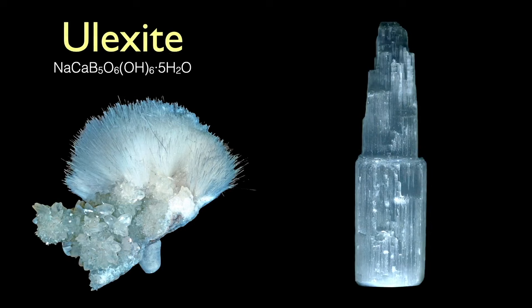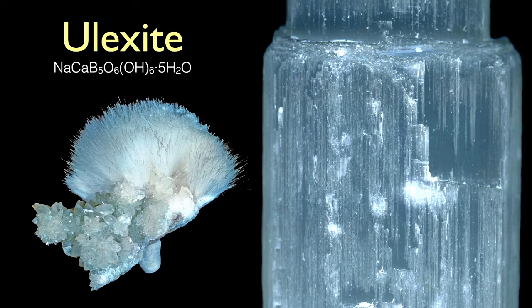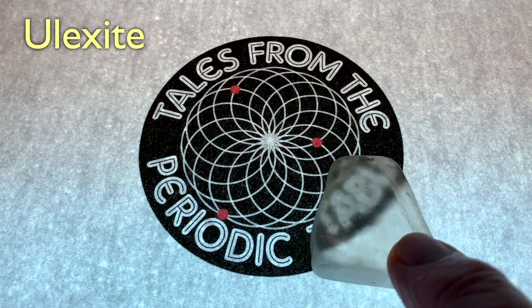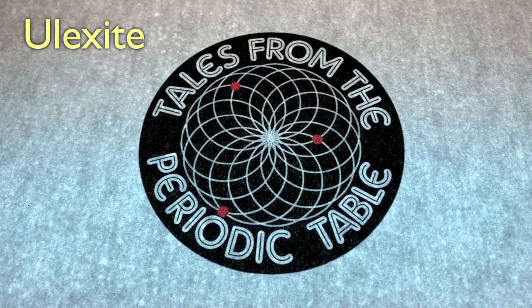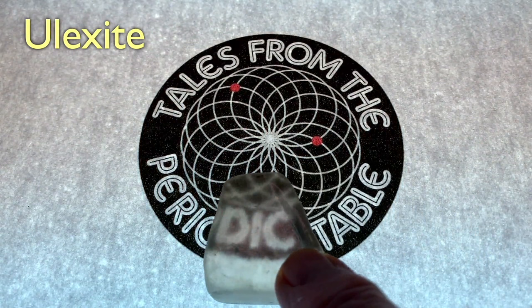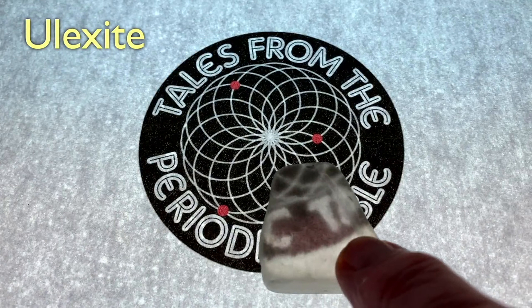Ulexite is a hydrated sodium-calcium borate hydroxide. It occurs as a silky white rounded crystalline mass, or sometimes in parallel fibers that can transmit light just like fiber optics. Although the piece on the right has been carved into a tower appearance, if I magnify it, you can clearly see the parallel crystals that act like fiber optics. Ulexite is sometimes known as TV rock or television stone. If you took a slice of the crystal and polished the ends, light coming through the crystal fibers would transmit the image from the bottom surface to the top surface. Get a piece of ulexite online and try that for yourself.